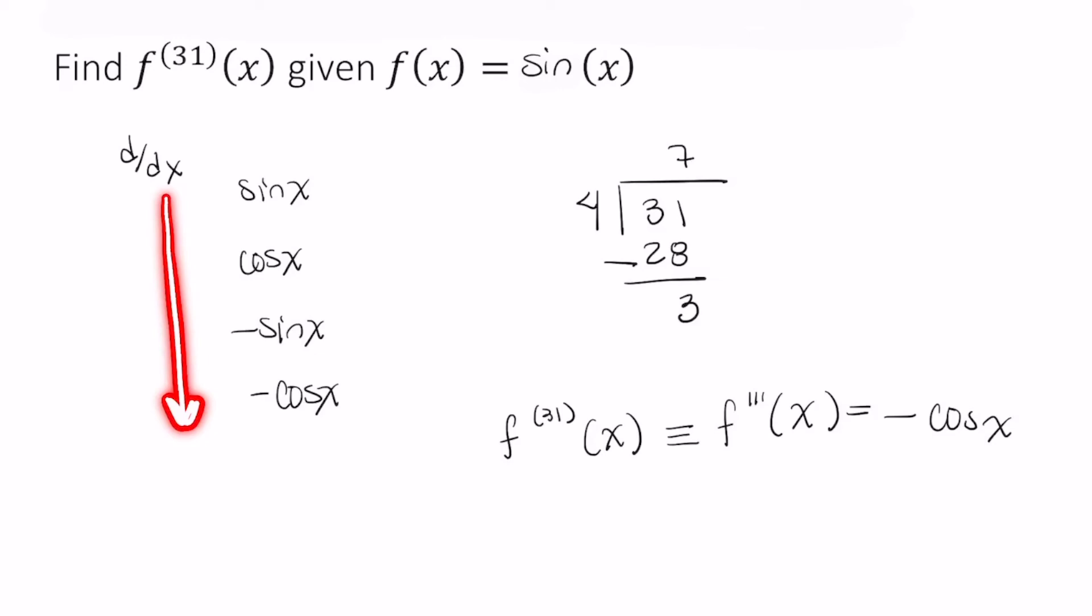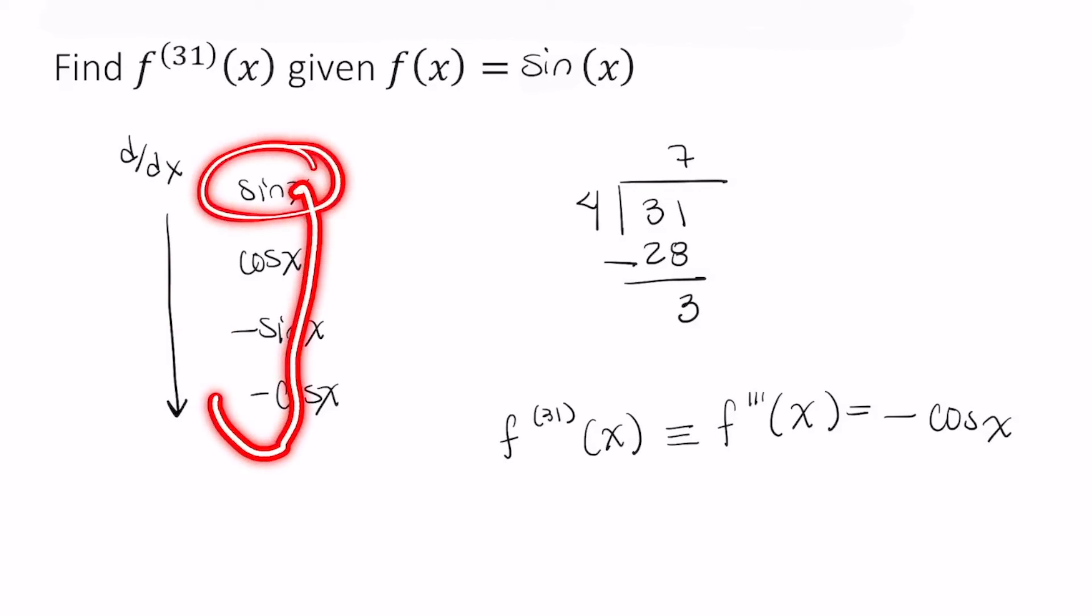This will tell you the derivative of cosine is negative sine. The derivative of negative cosine, you go back up to the top, is sine. The derivative of sine is cosine and so on. I hope this becomes a useful trick for remembering the derivatives of sine and cosine. I hope the contents of this video were helpful.